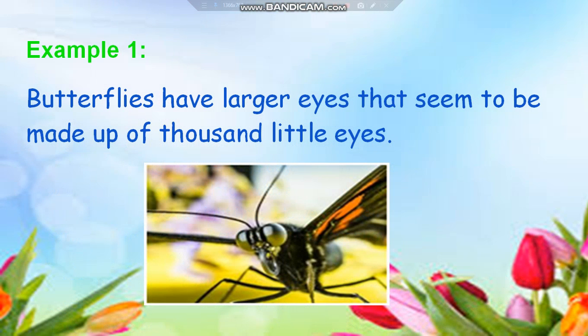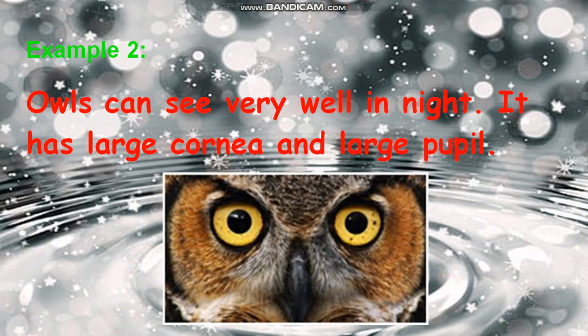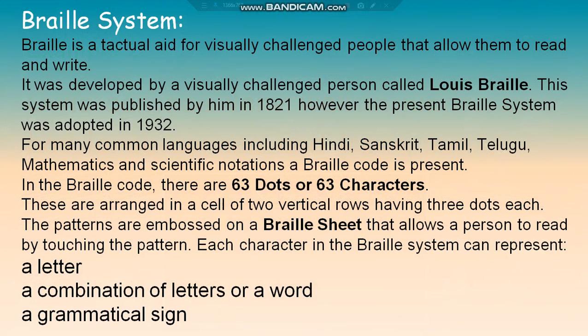This is a picture of a butterfly showing its large eye made up of thousands of little eyes. This is a picture of an owl, which can see very well at night due to its large cornea and large pupil.